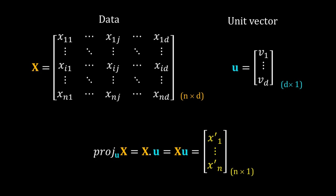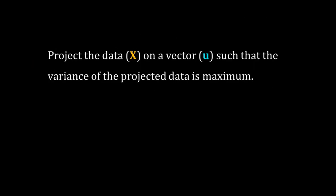Fine. XU is the projection of X on u, a unit vector. X is given. But how will I get the u? Now comes the condition that we apply for PCA. Project the data on a vector such that the variance of the projected data is maximum. That means I have to project the data X on a vector u in such a way, I have to choose the vector u such a way that the variance of the projected data is maximum.